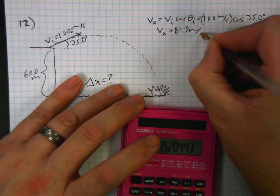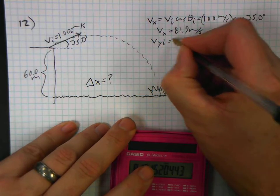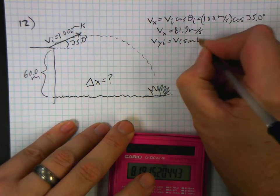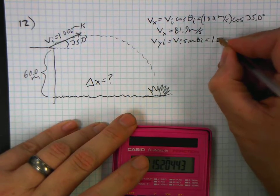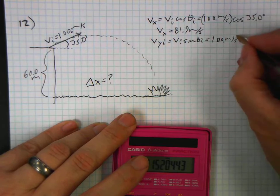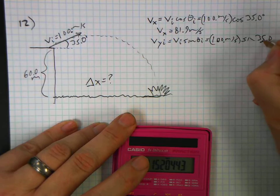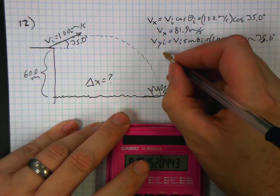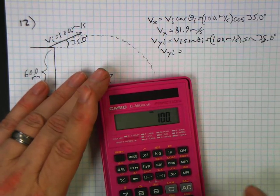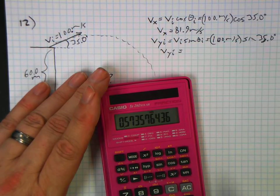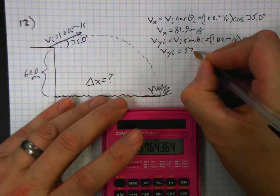81.9 meters per second for v sub x. The v y initial is equal to the initial times sine theta initial, which is 100 meters per second—guys keep it down a little—times the sine of 35.0 degrees. My handwriting is getting worse as the day progresses. V y initial: 100 times 35 sine is 57.4 meters per second.